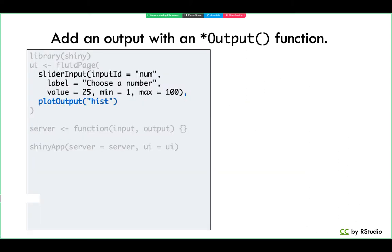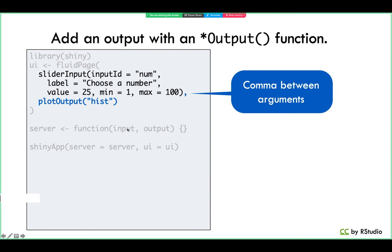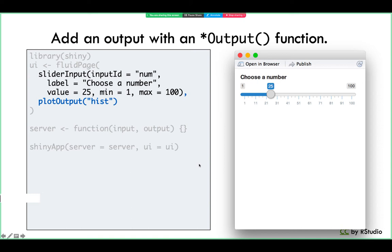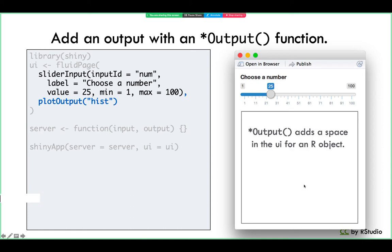So let's add an output function to our app — plotOutput('hist'), where 'hist' is the name. We don't have to write 'outputId equals' because it's the only required argument. We pass plotOutput('hist') to our fluidPage function as the second argument — don't forget to add a comma after the first argument. When we run this app in R, it doesn't look any different than before, which might be a little disappointing. But if you look at the HTML behind this app, there is now an additional div section that creates a placeholder for the R object to appear. At this point, the app has no idea what to put there — we've only told it we want a plot named 'hist,' but haven't written any code to create that plot. So we need to tell the app how to build it inside the server function.